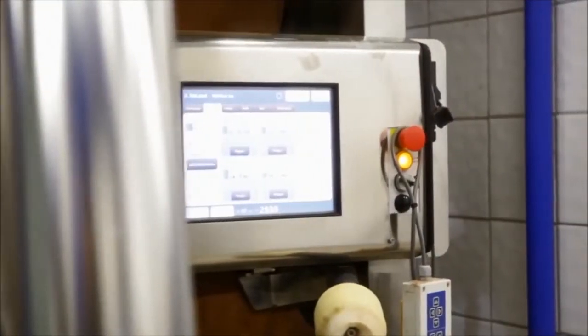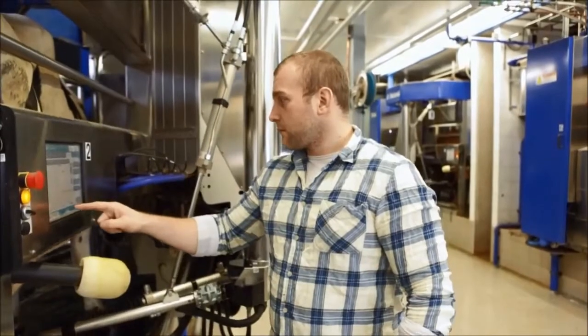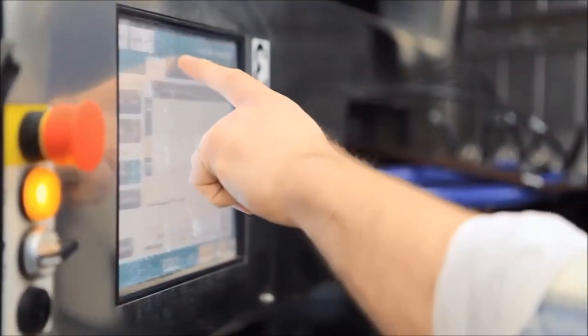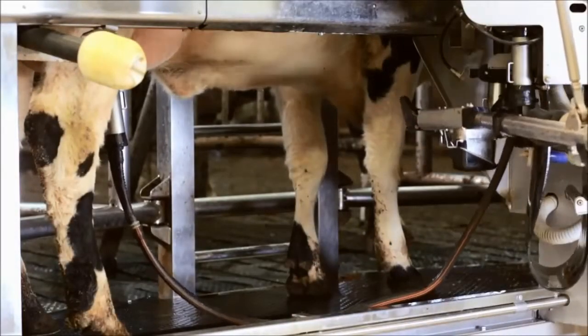The touch screen, with its unique and easy to use interface, gives you all needed information and keeps track of the input and output of the VMS. The robotic arm ensures precise and quick teat detection.